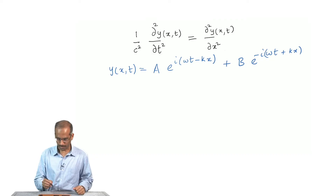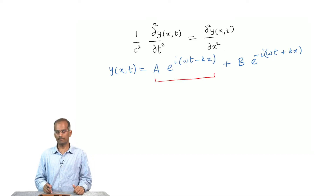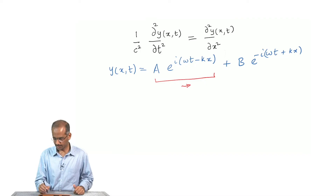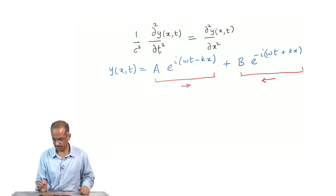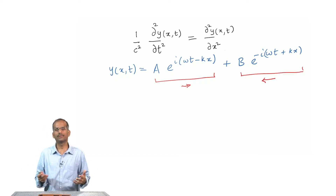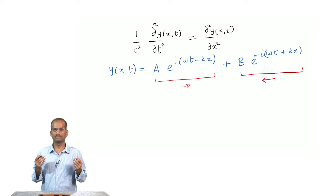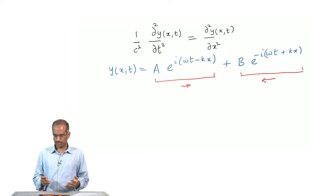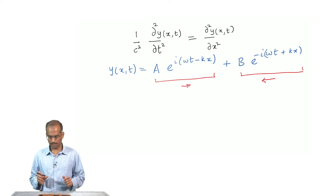The general solution consists of two parts: one part corresponds to a plane wave traveling in the positive x direction, and the second part is a plane wave traveling in the negative x direction. In general, you assume your waveform travels in both directions, with a and b as two unspecified amplitudes. This general solution is obtained by superposing the two possible solutions of the wave equation.